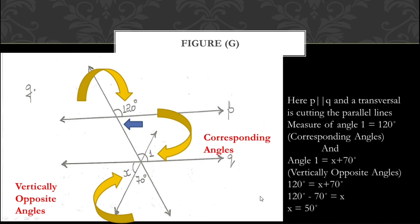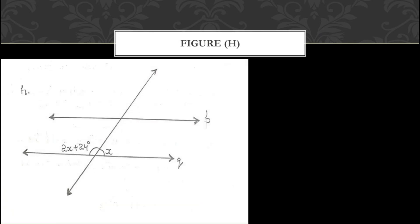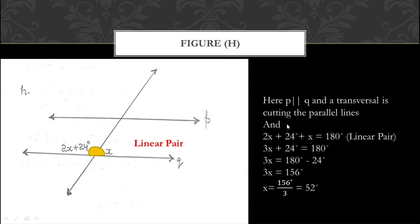Now let us move on to part H. In this part, two parallel lines P and Q are given and a transversal cuts them. The two angles inside the parallel lines are on the same side — they form a linear pair. When two angles form a semicircle on a line, they form a linear pair and their measurement is 180 degrees. The equation becomes: 2X + 24 + X = 180°.